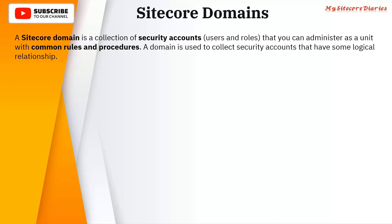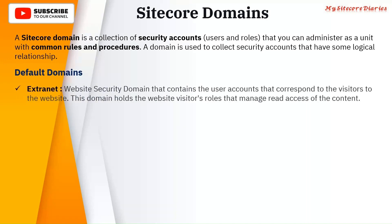Let's see what are the different default domains we have in Sitecore. First is Extranet — the website security domain that contains the user accounts corresponding to visitors to the website. This domain holds the website visitor roles that manage read access of the content. So Extranet is the domain associated with your customers or website users. By default, those website users are associated with the Extranet domain, and that domain holds roles that manage read access.